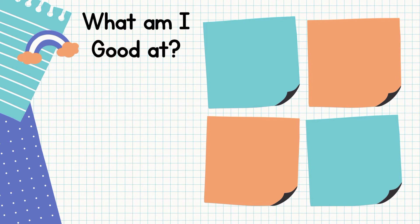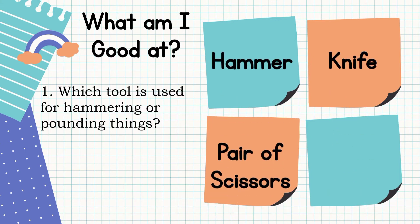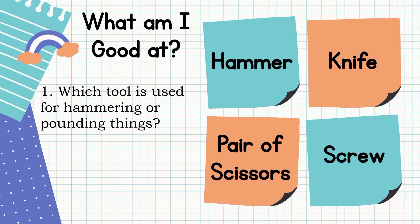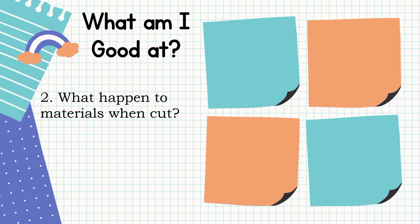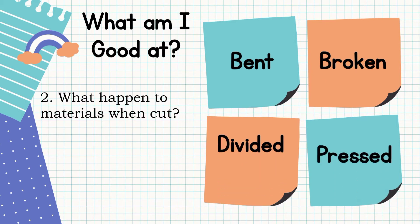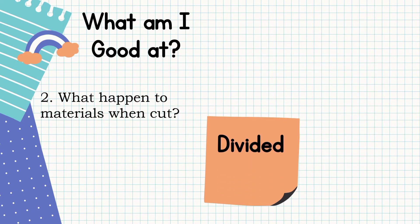What am I good at? Which tool is used for hammering or pounding pins? The choices are: hammer, knife, pair of scissors, or screw. The correct answer is hammer. Next question: What happened to materials when cut? The choices are: bent, broken, divided, or pressed. The correct answer is divided.